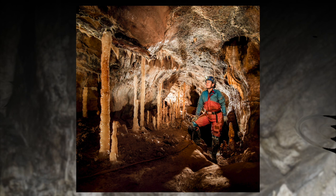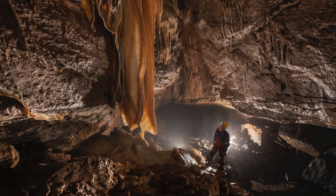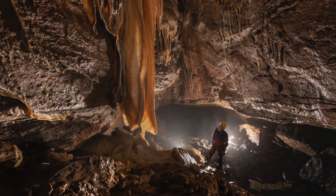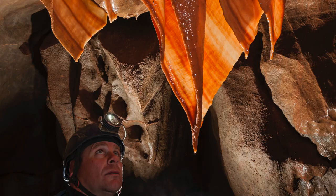This cave decoration is called a curtain — the Americans call them drapes. Curtains are formed on sloping ceilings as the calcite-rich water drips from numerous places. If a powerful light is shone through a curtain, it will reveal bands of colour. These show that the water from which the curtain was formed contained different minerals at different periods of time.